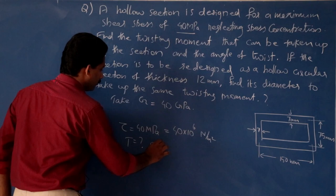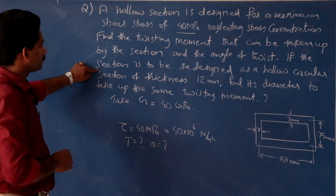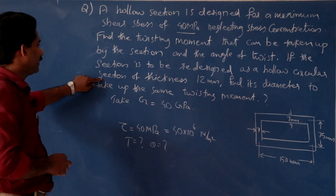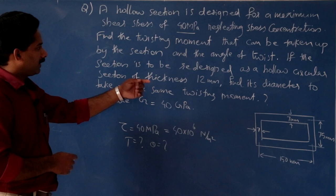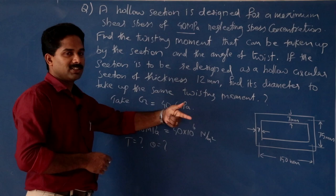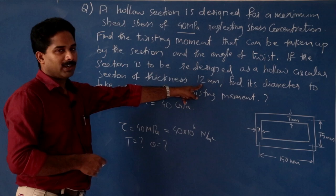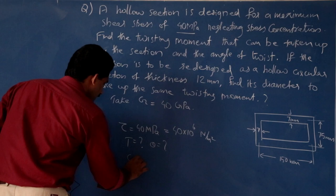We can evaluate the twisting moment, the torque, then the angle of twist per unit length theta. If the section is to be redesigned as a hollow circular section of thickness 12 mm, find its diameter to carry the same twisting moment. That is, it is a hollow rectangular pipe — how much will be the diameter of that circular tube?